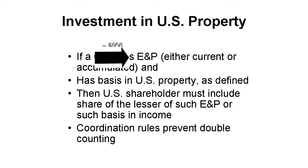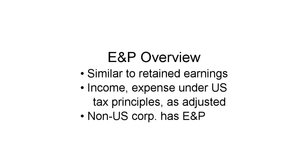The first part is earnings and profits. I cover that in other videos, but here's a quick recap. E&P, as it's called, is the tax equivalent of retained earnings. It's the corporation's net profits from all of its activities computed on a tax basis. Several types of things, like depreciation, may be computed a bit differently for E&P than for regular income tax. A corporation doesn't need to be subject to U.S. income tax to have E&P.